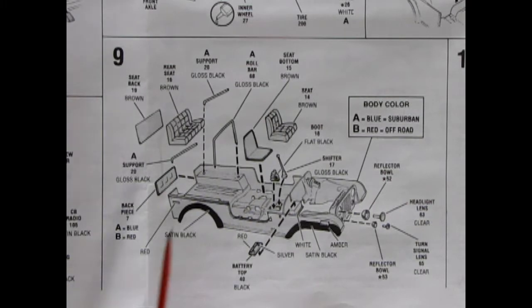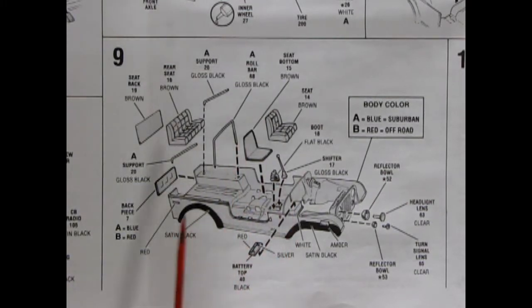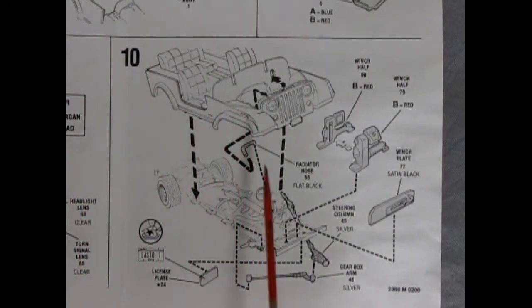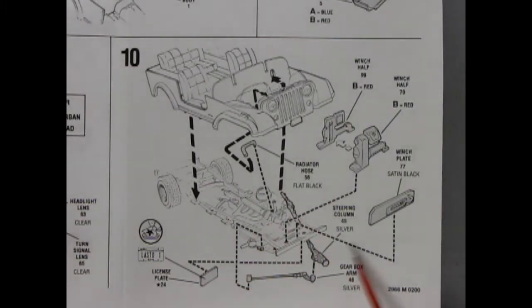Next we have the body with all the components going on there like the back panel, the supports for our roll bar, the seat in two pieces for the back and the same for the front with our buckets, the battery top and our headlights and reflectors. The completed body is then mounted onto the chassis with all the components you need in between such as the gearbox, steering column, winch and winch plate.